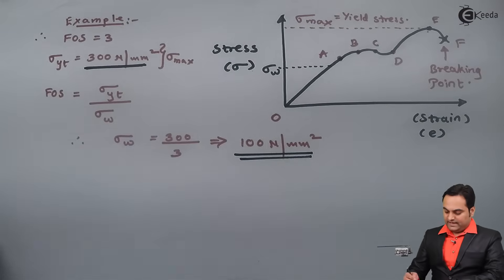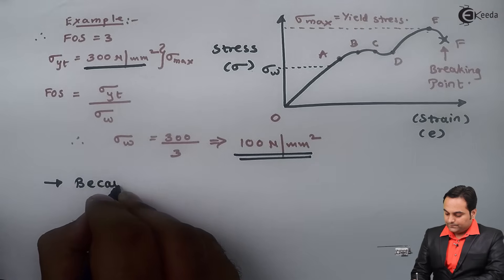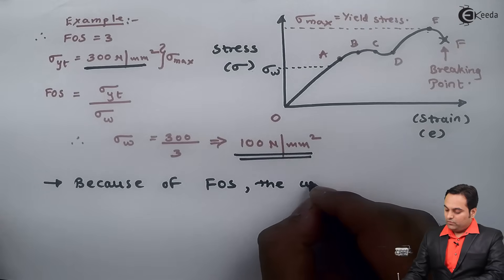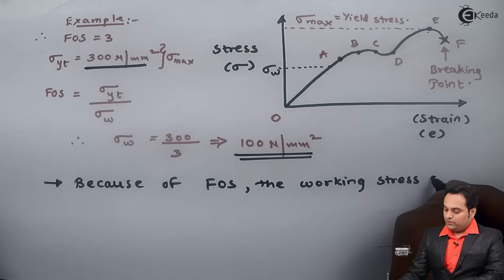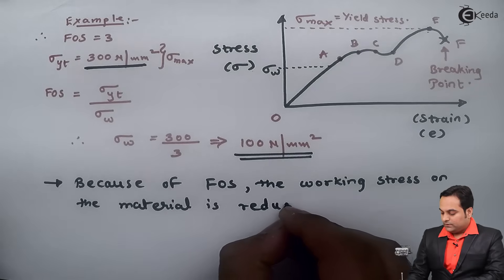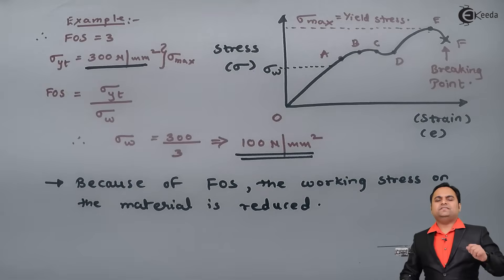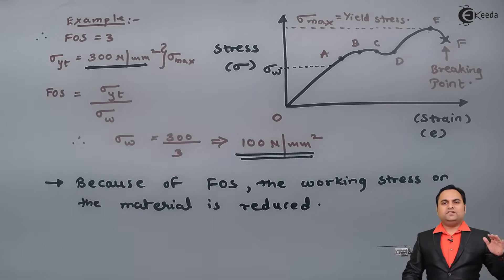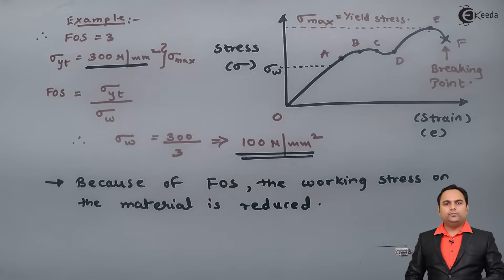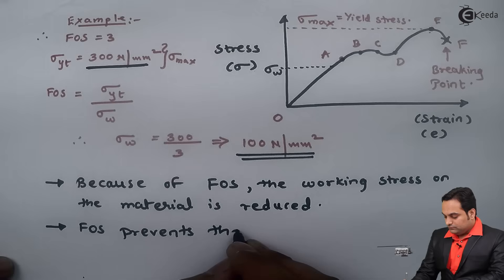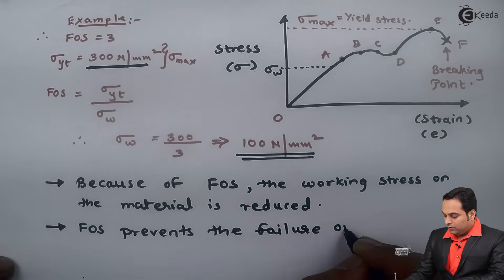This is the advantage of factor of safety. Because of FOS, the working stress on the material is reduced. Working stress is the stress with which we design the material or product. If working stress decreases, the material won't reach the yield stress value, and if it doesn't reach yield stress, it is not going to break. So FOS prevents the failure of the component.